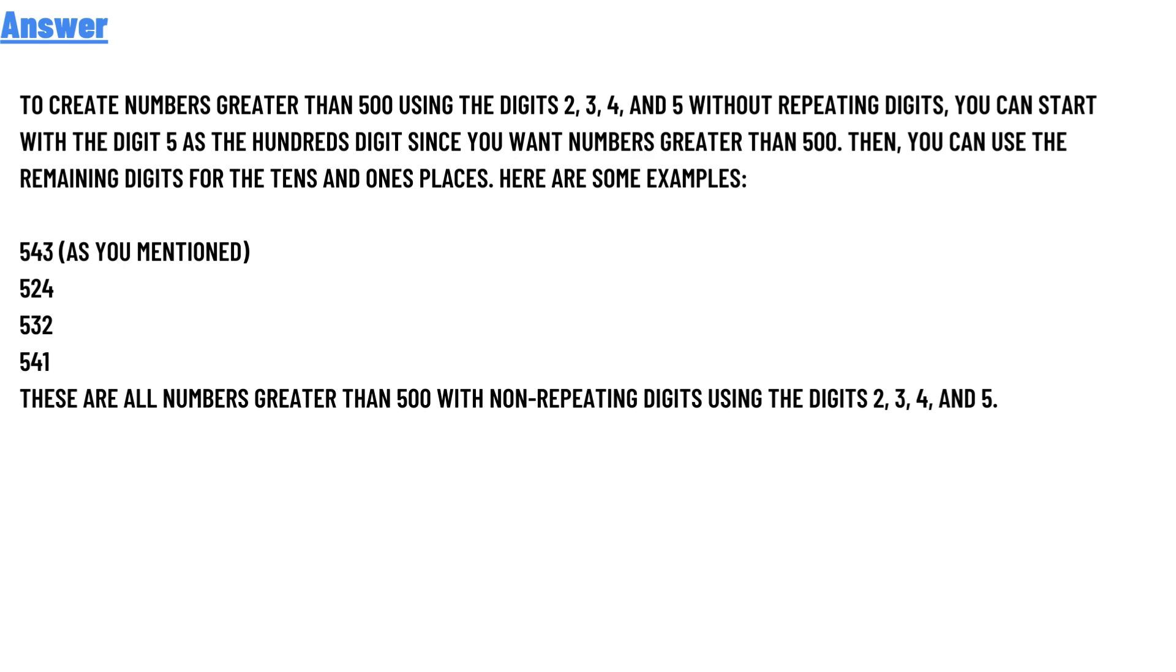Here are some examples: 543 as you mentioned, 524, 532, 541. These are all numbers greater than 500 with non-repeating digits using the digits 2, 3, 4, and 5.